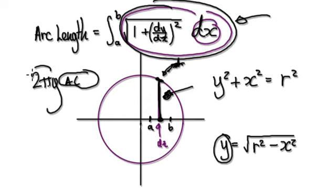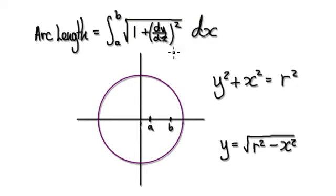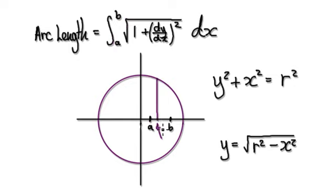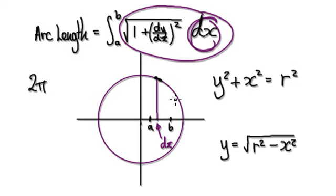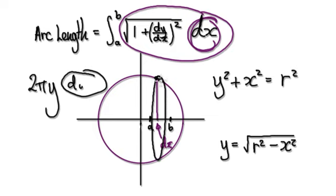Once you've got your arc length, times 2πy — the height here is y — and then you will get your circumference for that given arc length. You're summing up everything from a to b. The thickness here is dx; combine it with this and you get your arc length. Once you've got your arc length, times 2πy. That will give you your circumference, and then you've got to sum up all those strips.